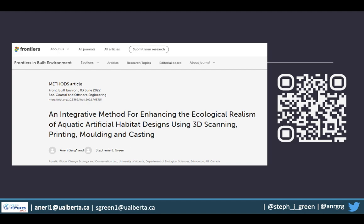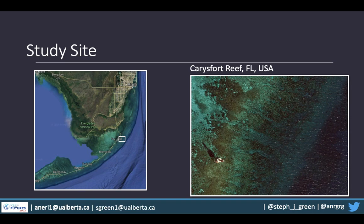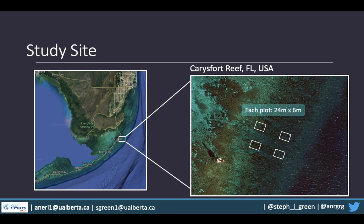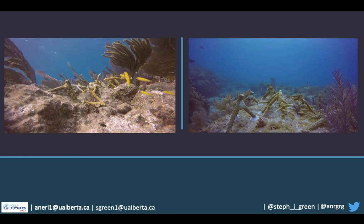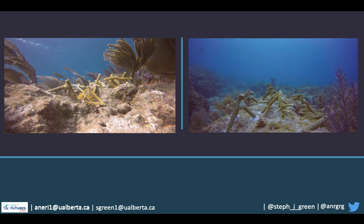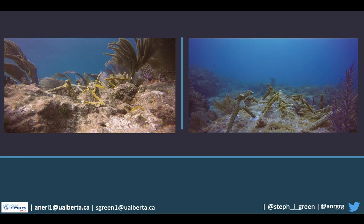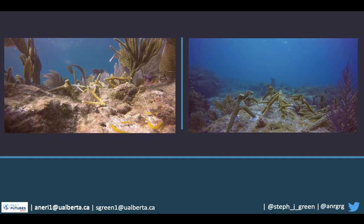Once she had this method worked out, we looked at these three research objectives in the field at a reef just offshore from where we are at Reef Futures — Carey Sport Reef here in Florida. This reef provides a wonderful study site to test questions about background structural complexity effects on fish recruitment, because you can choose plots that differ in background structural relief on both the reef flat and the high spur-and-groove environment. Anari worked closely with partners at the Coral Restoration Foundation, who were already outplanting Acropora cervicornis at this site, and set up four plots: two of high background structural complexity and two of low.